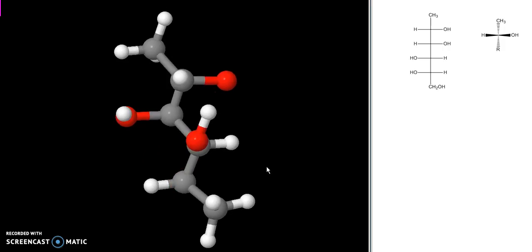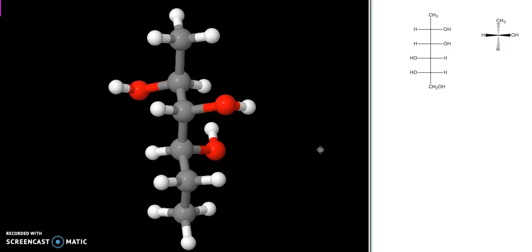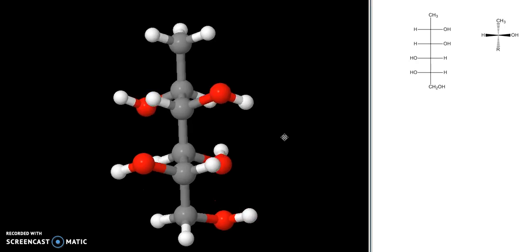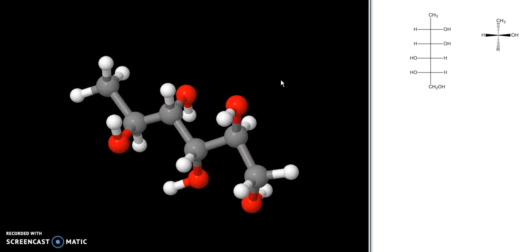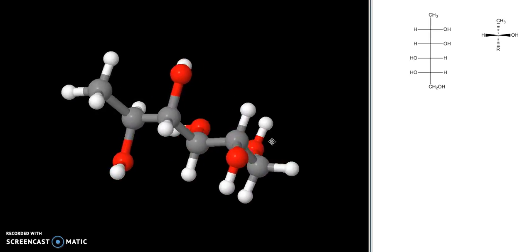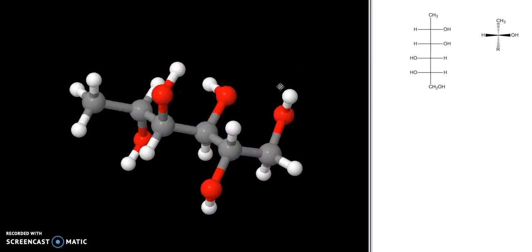Do the same thing for the next carbon. Group on the left is an OH. And finally, for the last one, since it's not a chiral center, I can choose either one. So that's how we can assign a three-dimensional structure from our two-dimensional Fischer projection.